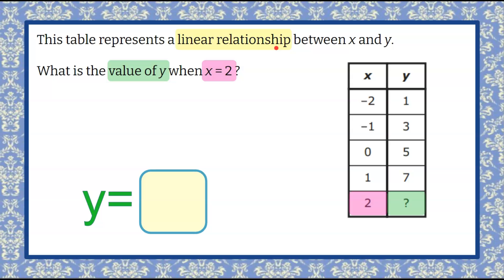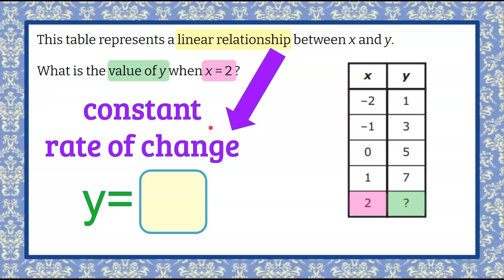Going back to what we were told, a linear relationship represents a constant rate of change. Let's look at our table to understand this. That means every time X increases, there's going to be a constant increase in Y as well.